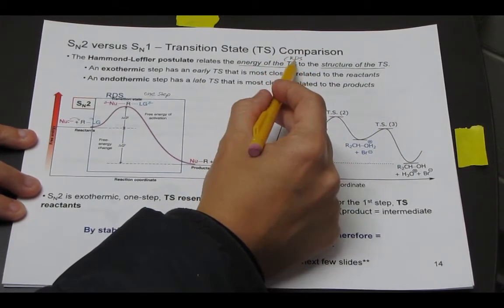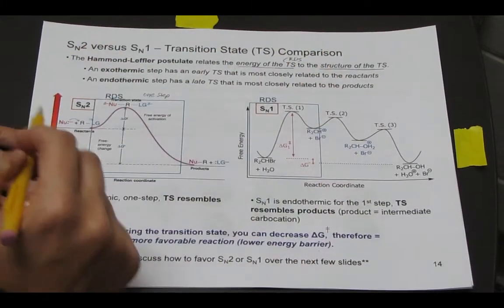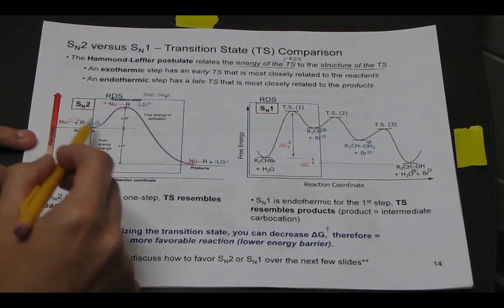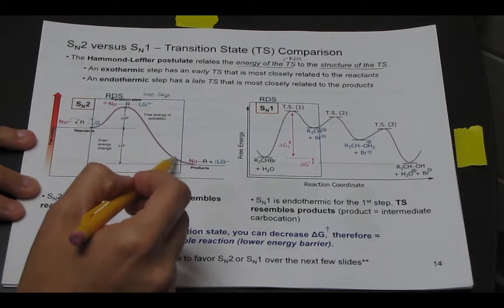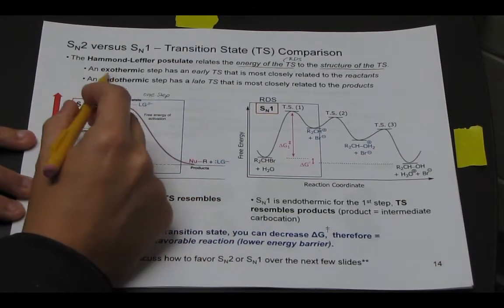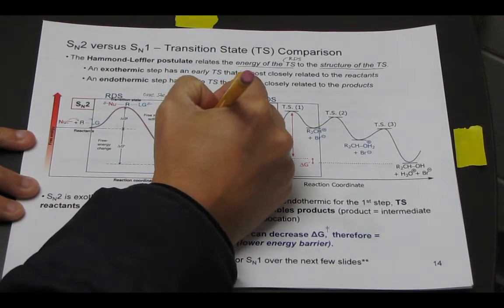So we want to look at the rate-determining step transition state structure. And so in the SN2, we have one step, and it goes downhill, and so that's considered exothermic.